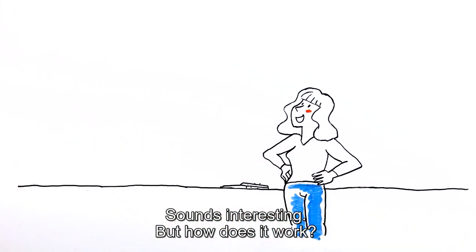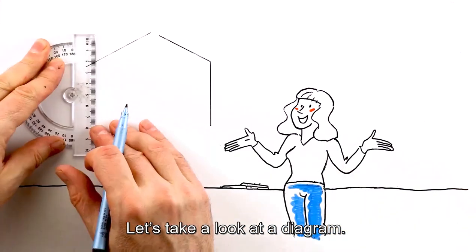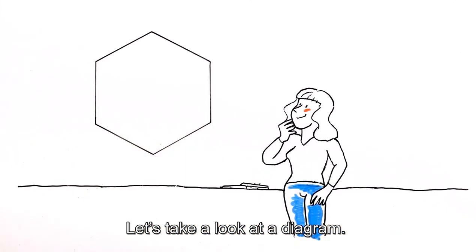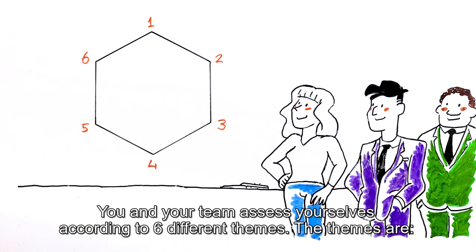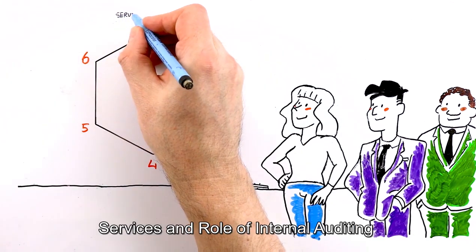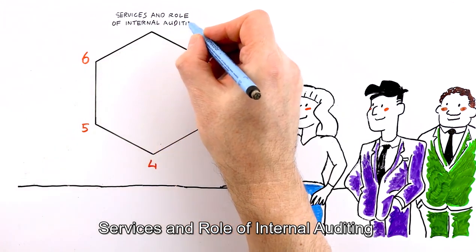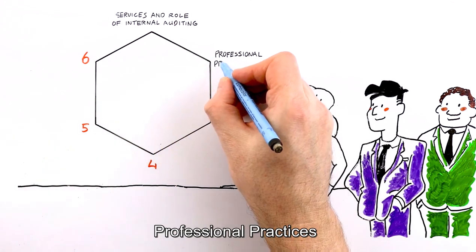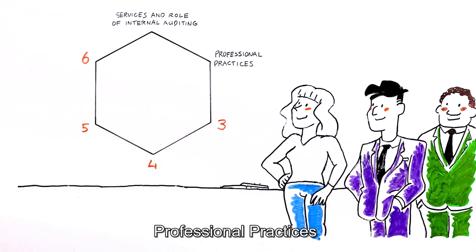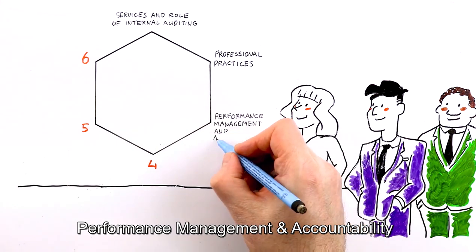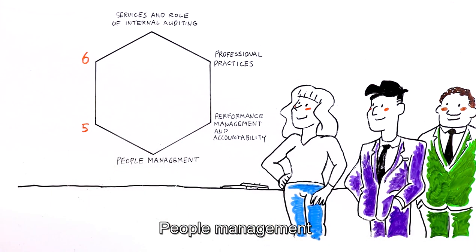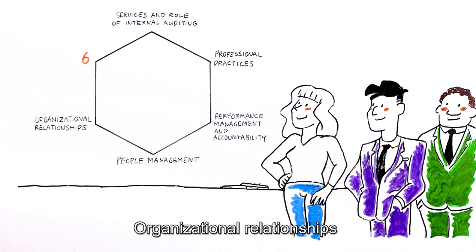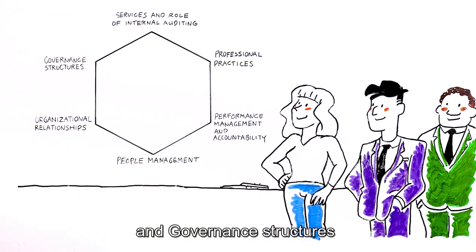Sounds interesting, but how does it work? Let's take a look at the diagram. You and your team assess yourselves according to six different themes: Service and role of internal auditing, Professional practices, Performance management and accountability, People management, Organizational relationships, and Governance structures.